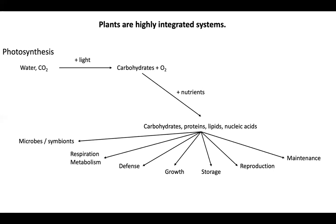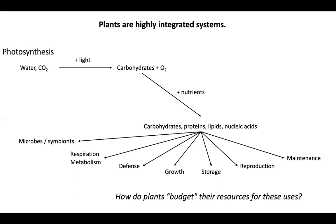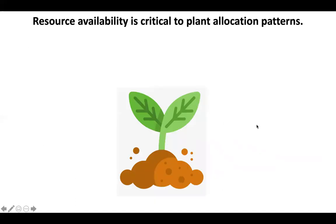We have animals that graze on plants, so plants produce all sorts of defenses to prevent that. Plants also have to grow, and that takes resources. Some plants also store a lot of resources for times of need. When plants reproduce — when they make their flowers, their pollen, their seeds — these things take a lot of resources. And just existing in the environment takes resources; it costs to maintain your tissues. So how plants allocate these resources among these different uses is really unclear. How do plants create such a budget? How do plants know to think about all of these different things?